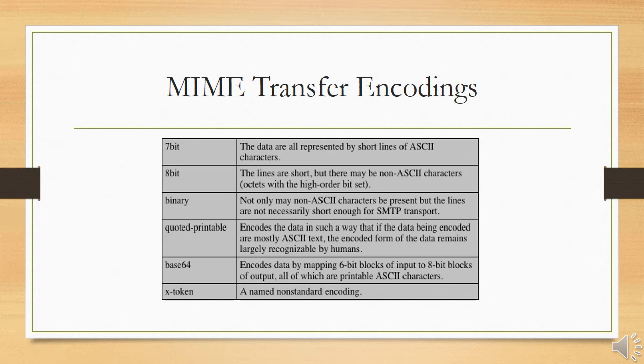The other major component of the MIME specification, in addition to the content type specification, is a definition of transfer encoding for message bodies. The objective is to provide reliable delivery across the largest range of environments. The MIME standard defines two methods of encoding data. The content transfer encoding field can actually take on six values, as listed in the table shown here.